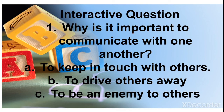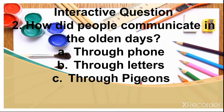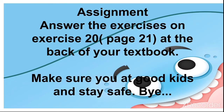Let's look at some interactive questions. Question one: Why is it important to communicate with one another? A — to keep in touch with others, B — to drive others away, C — to be enemies to others. The right option is A, to keep in touch with others. Question two: How did people communicate in the olden days? A — through phones, B — through letters, C — through pigeons. The right option is C, through pigeons.